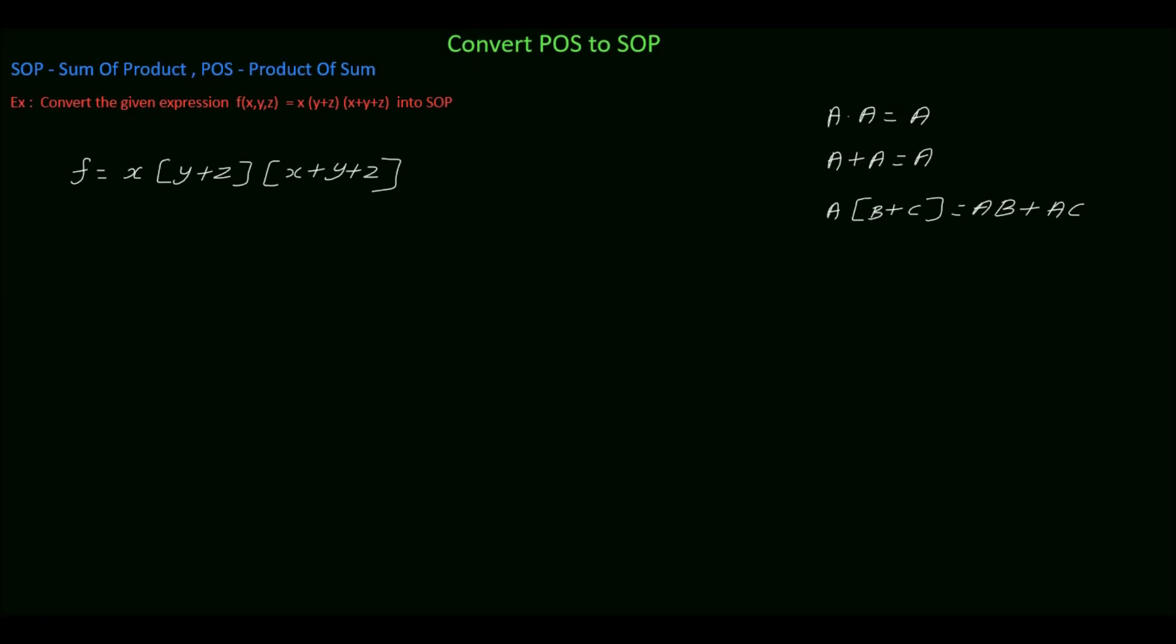In this tutorial, we will see how to convert product of sum into sum of product. The procedure is very simple. Just we have to multiply the sum terms and simplify the expression using basic theorems and properties of Boolean algebra. Then finally we will get sum of product expression.